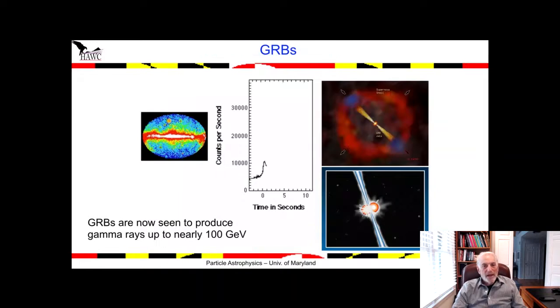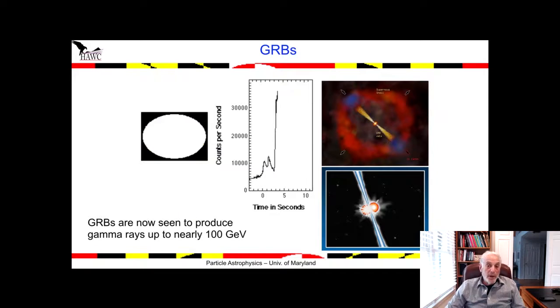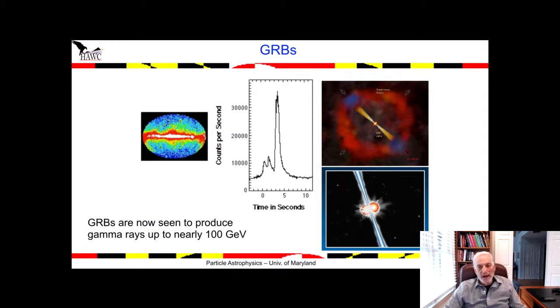Gamma ray bursts are some of the most energetic phenomena in the universe. About twice a day something goes bang somewhere in the universe that produces more gamma rays than the rest of the universe combined. What we now know by using multi-messenger astronomy is that at least some gamma ray bursts can be produced by merging binary neutron stars. This was a discovery made in the last couple years using the LIGO experiment and the Fermi gamma ray space telescope.